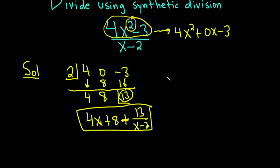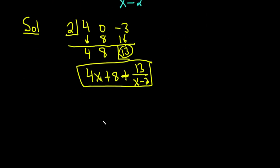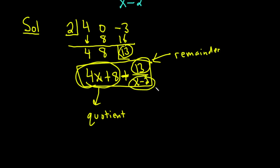So these things all have names. The 4x plus 8, this is called the quotient. The 13, this is called the remainder. And the x minus 2, this is called the divisor.